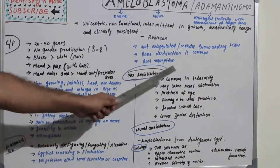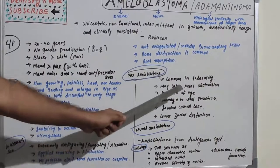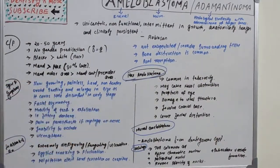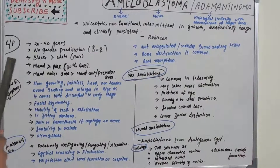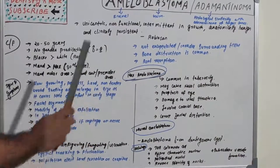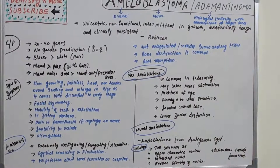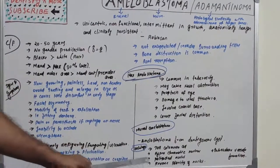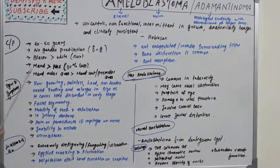In the case of maxillary involvement, ameloblastoma commonly affects the tuberosity, causing nasal obstruction, proptosis of the eye, damage to vital structures, involvement of the cranial base, and gross facial distortion. Mural ameloblastoma is ameloblastoma arising from a dentigerous cyst.